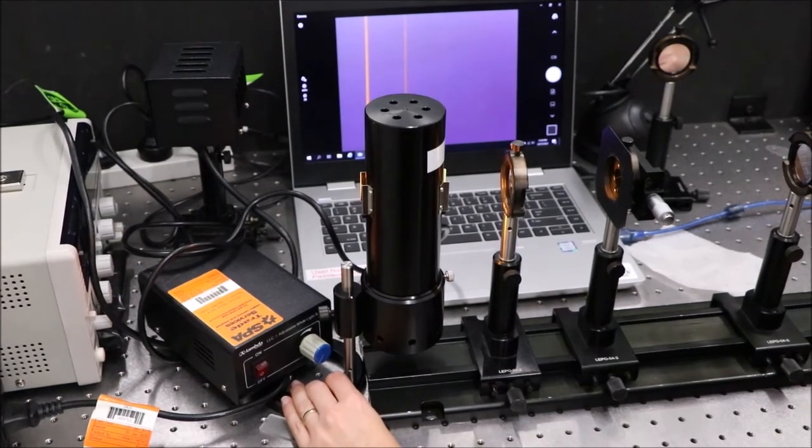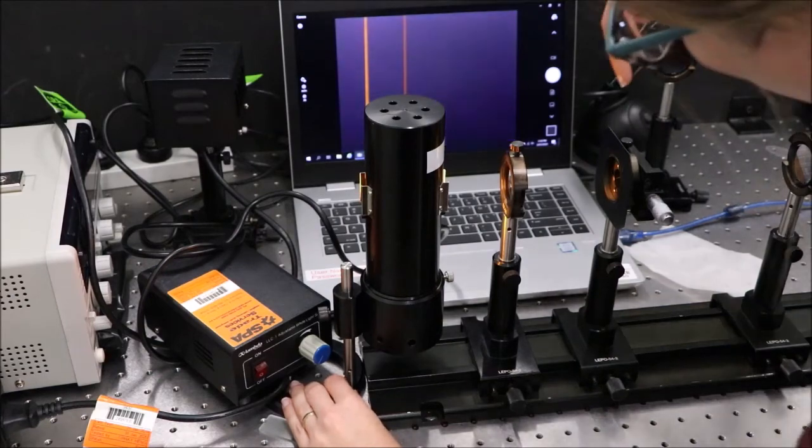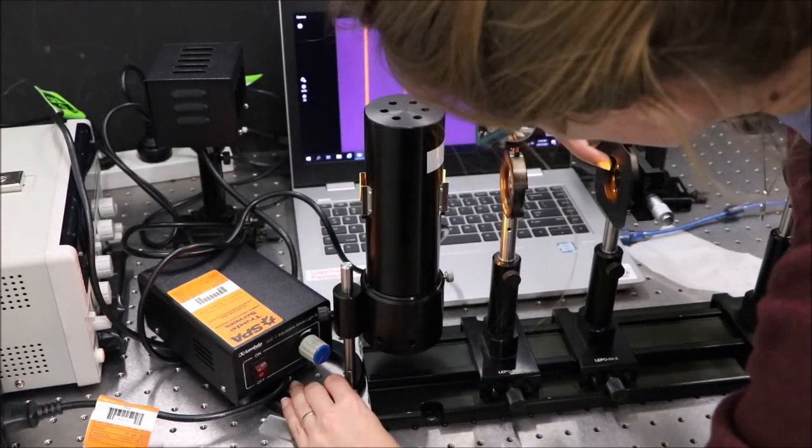Then we need to adjust the position of the sodium lamp and nothing else so that we have a focused image on the slit, on the center of the slit.